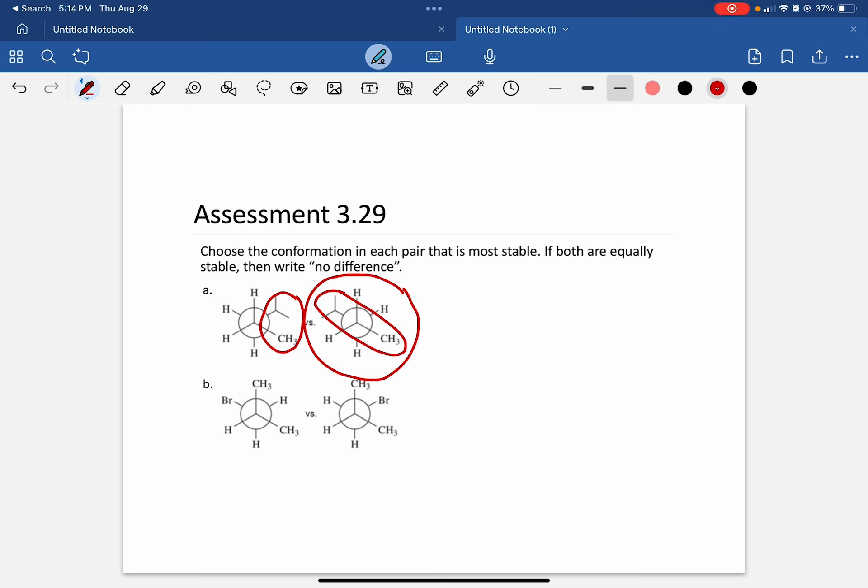Letter B, we have a bromine with a methyl group here and then a methyl group here. And in the second conformation, we have all three of those groups running right up against each other.